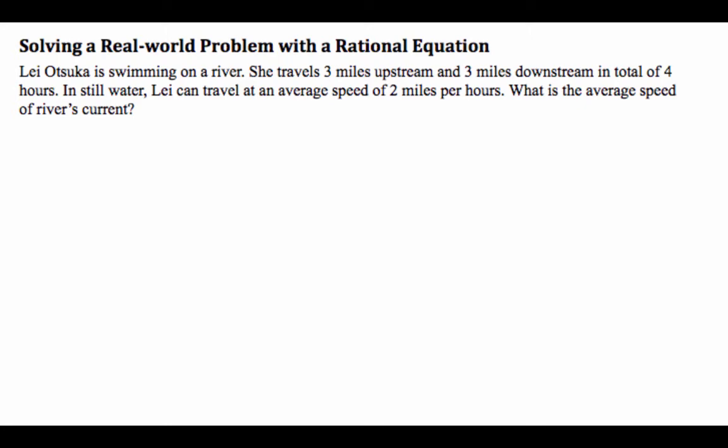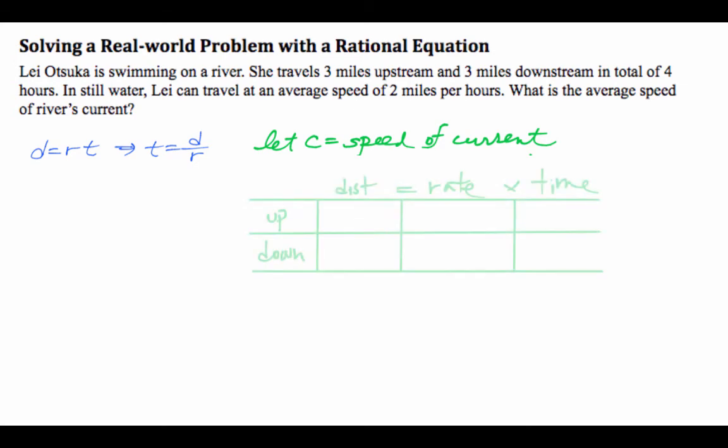Lei Osuka is swimming on a river. She travels 3 miles upstream and 3 miles downstream in total of 4 hours. In still water, she could travel at average speed of 2 miles per hour. What is the average speed of the river's current? Because this is a distance question, we need to use a distance formula. I think the key here will be time, and time is distance divided by rate. Let's move on with the question.